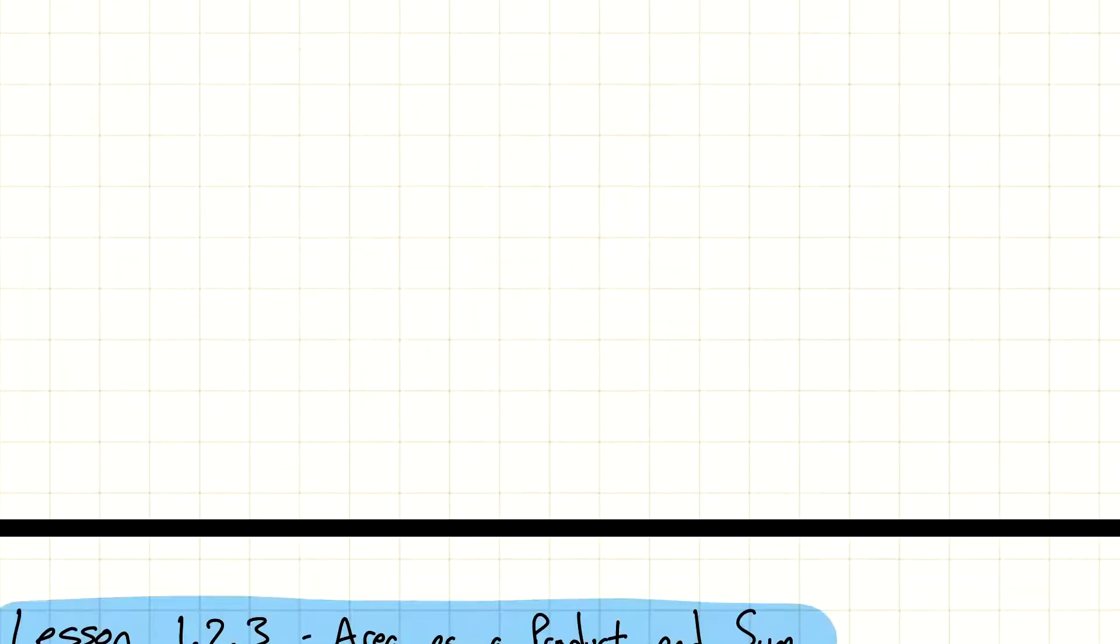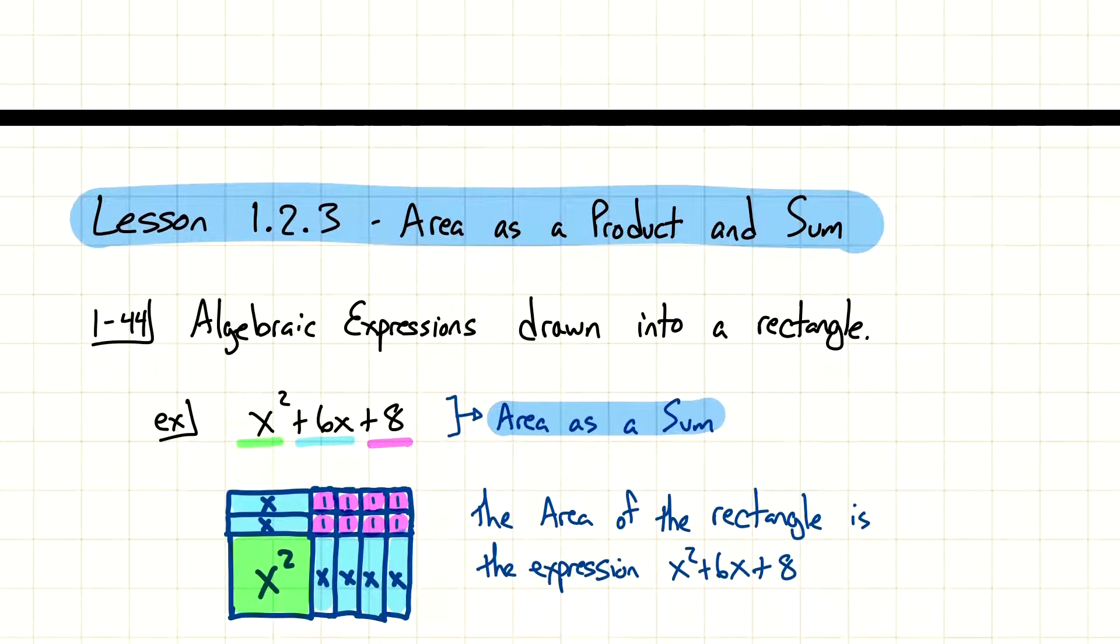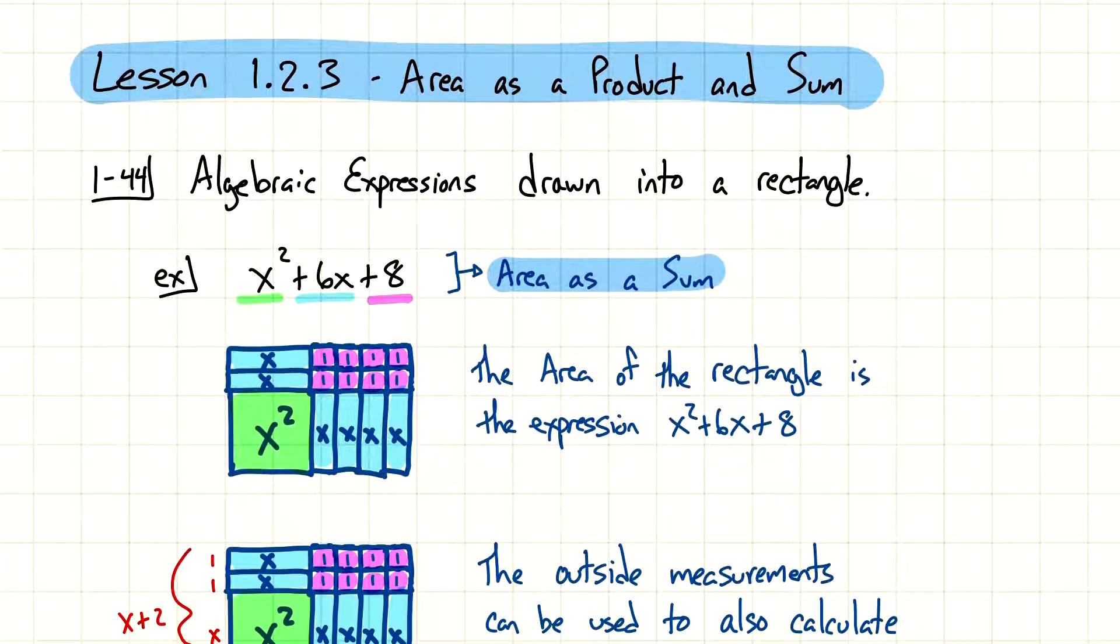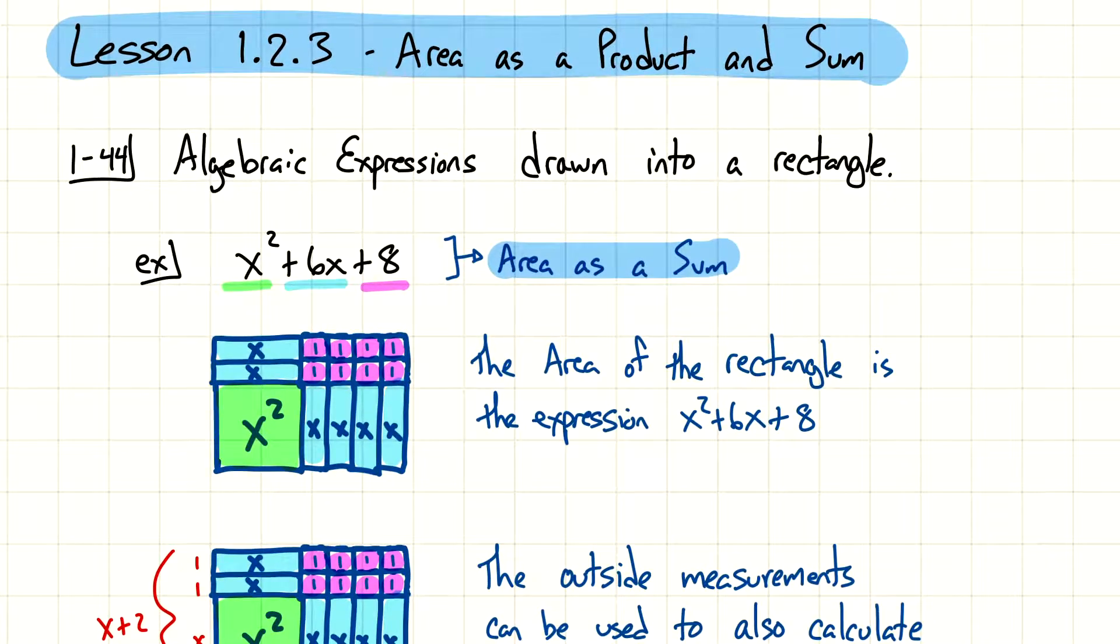The first set of notes on areas of product and sum, we're going to take an algebraic expression, and I'm going to show you what that would look like drawn out into the shape of a rectangle, and see how that relates to the area. A lot of times we see algebraic expressions, and we don't think that they could actually be physically represented using objects. You might have seen this before using algebra tiles in the previous course, which is pretty much the same thing.